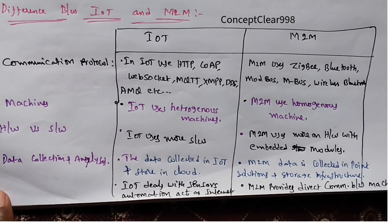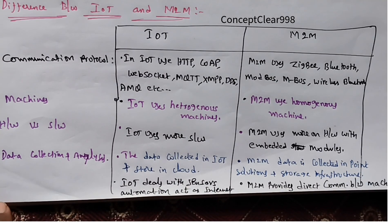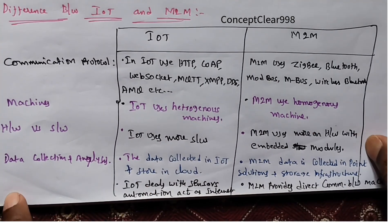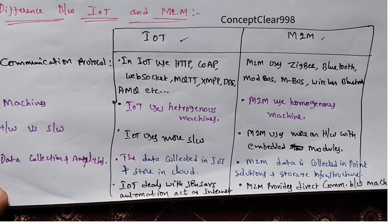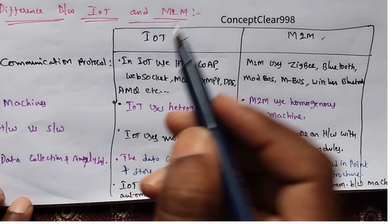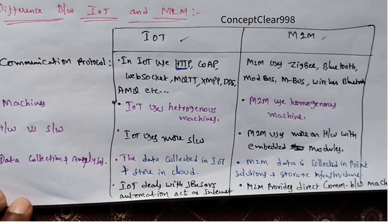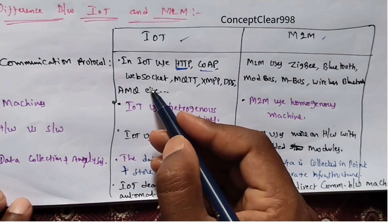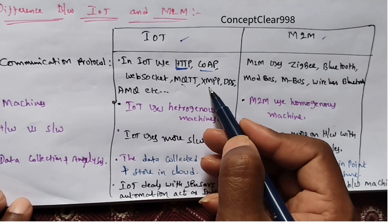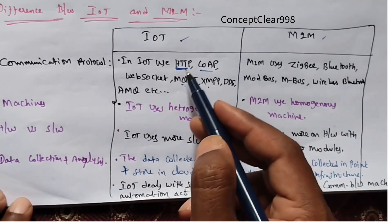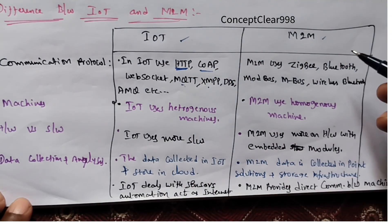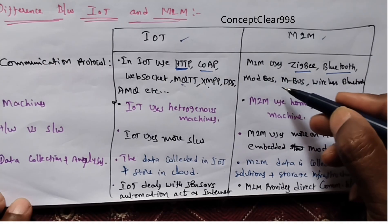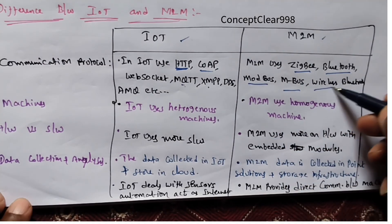The first aspect is communication protocols. In IoT, protocols include HTTP, FTP, CoAP, WebSocket, MQTT, XMPP, and DDS. In M2M, protocols include GP protocol, Bluetooth, Modbus, and other wireless protocols.